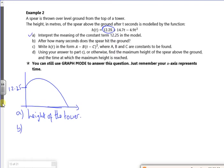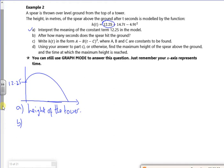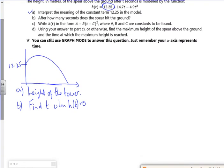B, after how many seconds does the spear hit the ground? So it hits the ground when the height is zero. So I'm going to find t when h of t is nothing. So I'll stick it in poly. So let's have a look, stick that in poly.